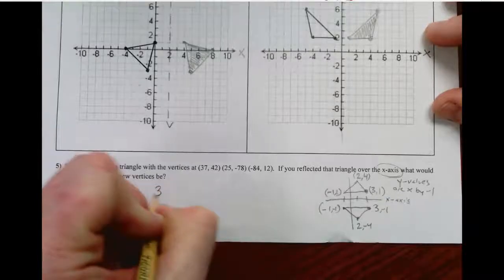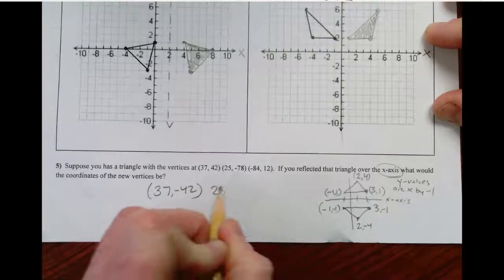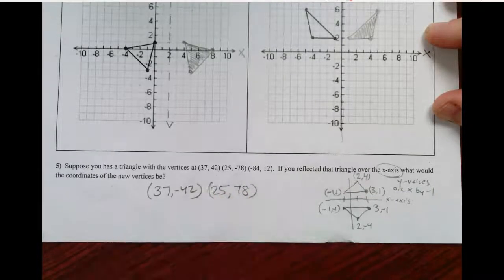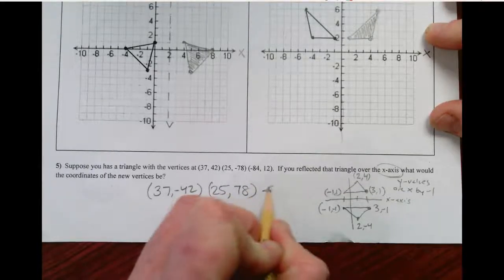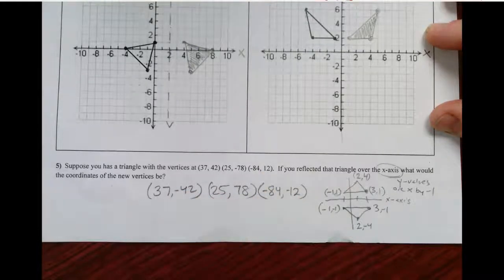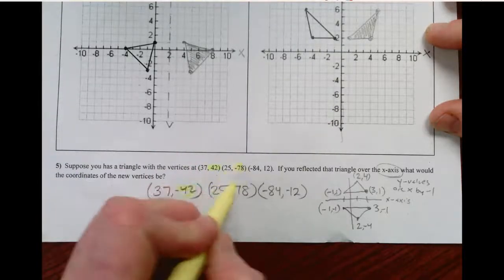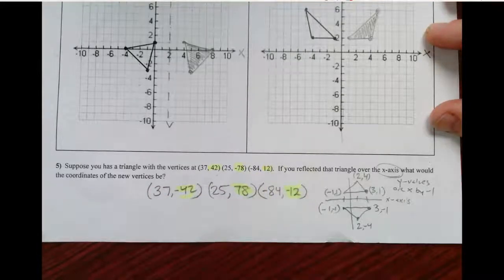So this would become 37, negative 42, 25, positive 78, and this would become negative 84, negative 12. The only thing that changed are the signs of the y values.